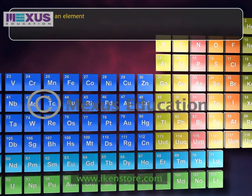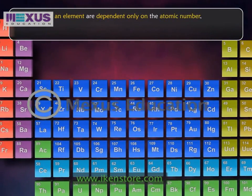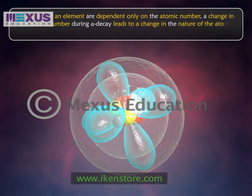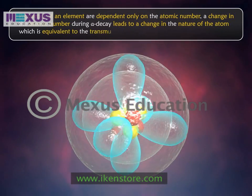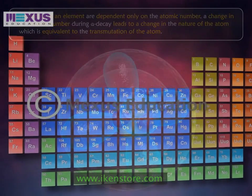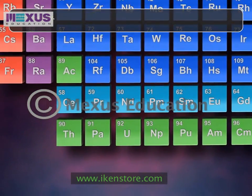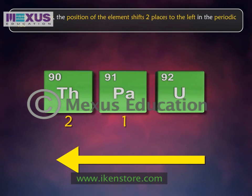The properties of an element are dependent only on the atomic number. A change in the atomic number during alpha decay leads to a change in the nature of the atom, which is equivalent to the transmutation of the atom. Thus, after alpha decay, the position of the element shifts two places to the left in the periodic table.